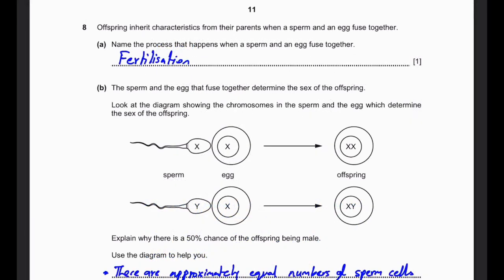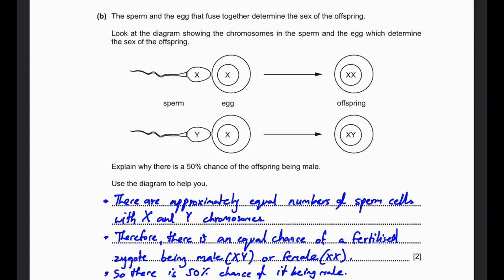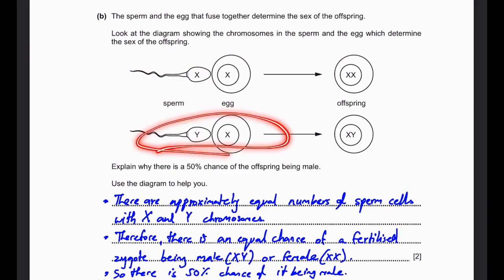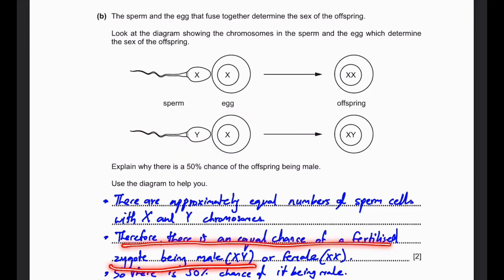Question 8. Offspring inherit characteristics from their parents when a sperm and egg fuse together. The process that happens when a sperm and egg fuse is fertilization. The sperm and egg determine the sex of the offspring. There is a 50% chance of the offspring being male because there are approximately equal numbers of sperm cells with X and Y chromosomes. Since each type is 50%, there's an equal chance of a fertilized zygote being male (XY) or female (XX).